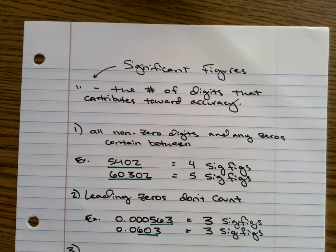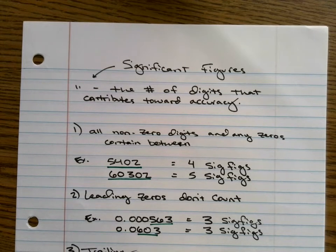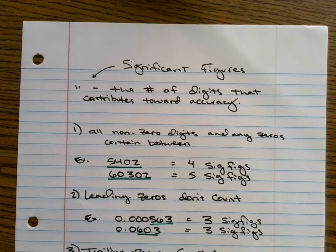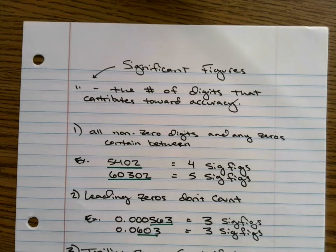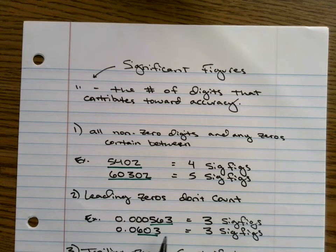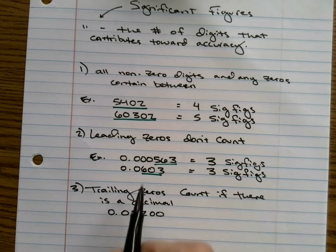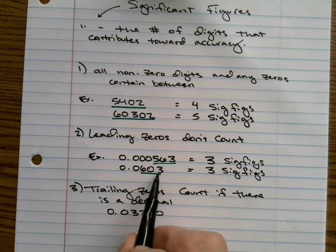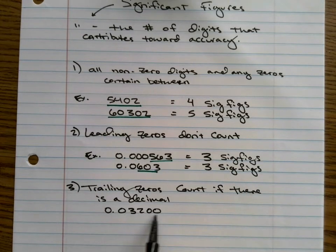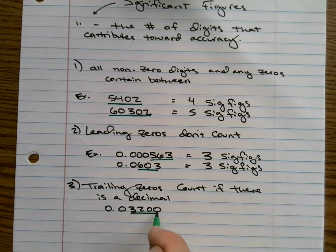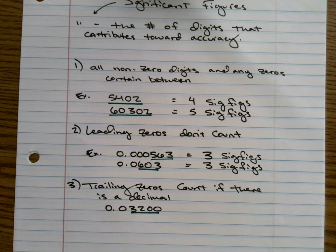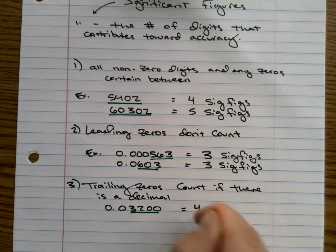So three. Trailing zeros count if there is a decimal. So for example, I have 0.03200. Now, compared to this one above, I'm off the screen. Sorry about that. If you look above, this zero is trapped in between two non-zero digits. But here we have trailing zeros behind this three and this two. We would actually count these ones because they're trailing. And that's because there is a decimal there. If there's no decimal, it would be different. So in this example, we have four sig figs.